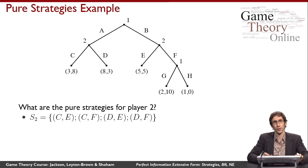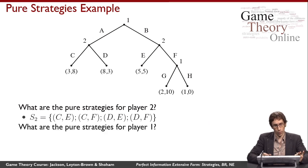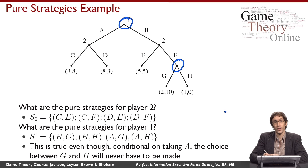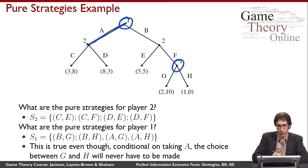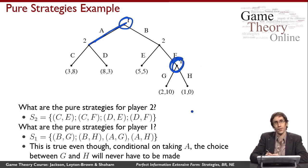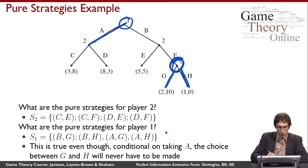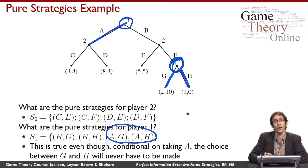For player one, things are a bit more interesting. Player one also has two choice nodes, so there are again four pure strategies — the cross products of those two sets. Importantly, if player one takes action A, he will never reach his second choice node since his own action makes it unreachable. Nevertheless, the pure strategy AG is still different from the pure strategy AH, so there are still four pure strategies for player one rather than three.